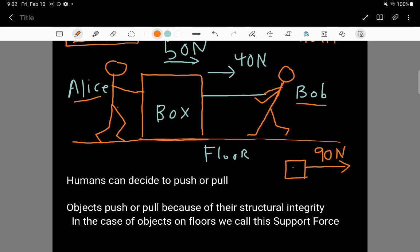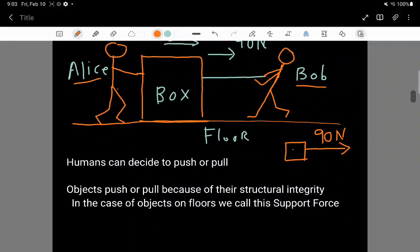One of the really confusing things for students learning about force early on is the fact that some forces can be decided to turn on or turn off. If Bob got tired of pulling on the box, Bob could just relax their muscles and the force on the box at least due to Bob would turn off.